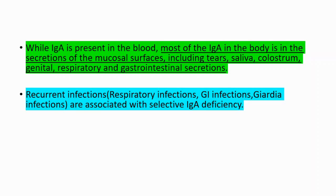Because of that, if you are deficient in IgA, you're going to have recurrent infections in your respiratory tract and gastrointestinal tract. Other than that, you're going to have recurrent Giardia infections, and we're going to touch on that in a minute.